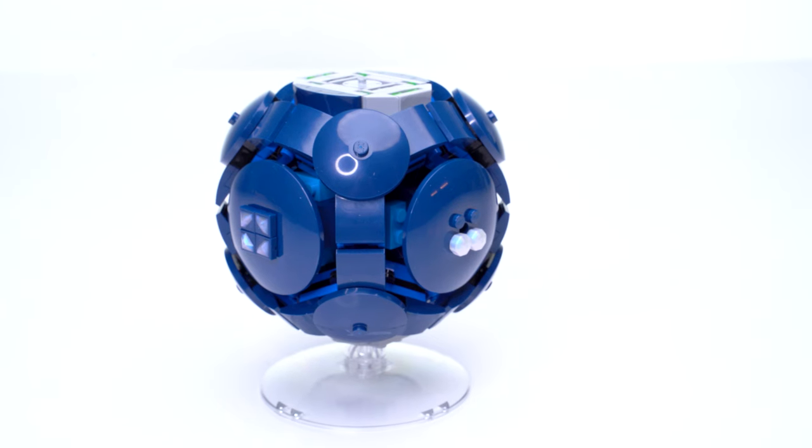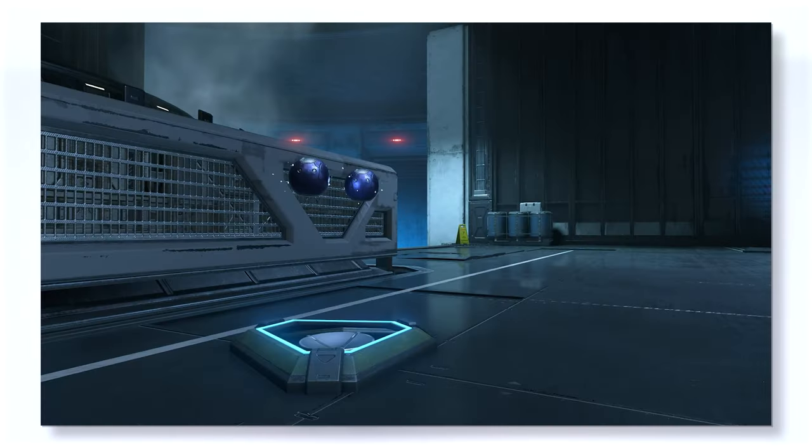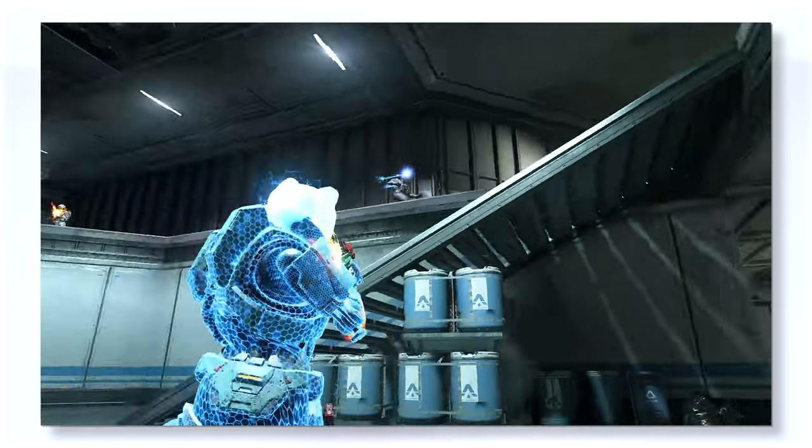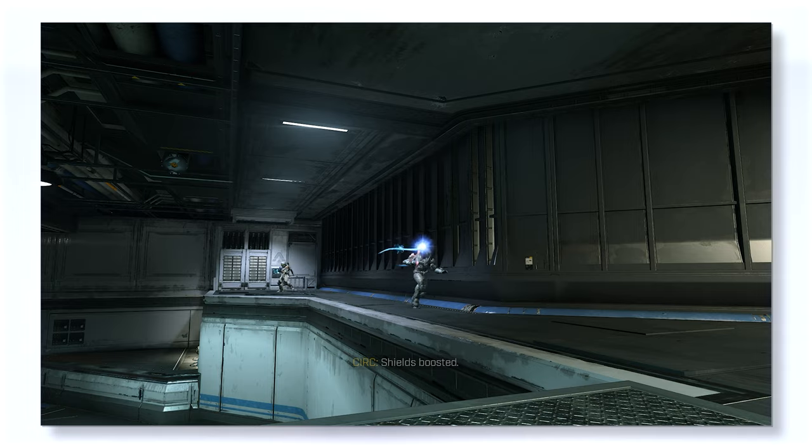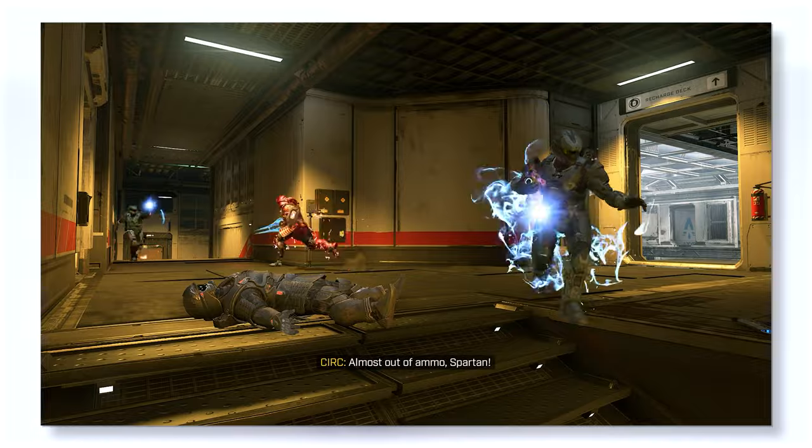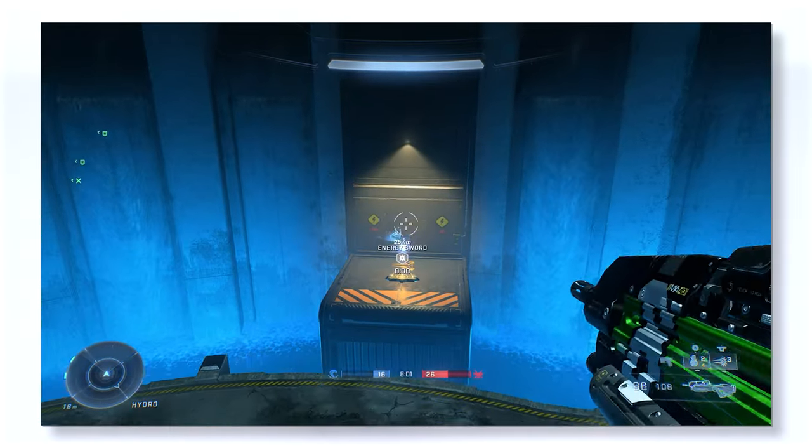First up, we have the LEGO Covenant Plasma Grenade. Originally introduced all the way back in 2001 with Halo Combat Evolved, the plasma grenade is a hand grenade used by the Covenant. A long fuse timer is balanced out with a huge superheated plasma explosion radius and, most fun of all, the ability to stick enemies.